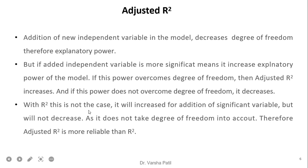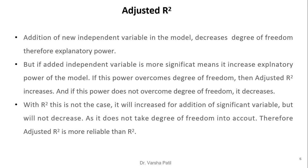With r-square, this is not the case — it will increase for addition of a significant variable but will not decrease; it remains as it is, as it does not take degree of freedom into account. Therefore, adjusted r-square is more reliable than r-square. When we add new variables, explanatory power and degree of freedom both decrease, but if the variable is significant its explanatory power overcomes the degree of freedom effect and adjusted r-square will increase; otherwise it will decrease.